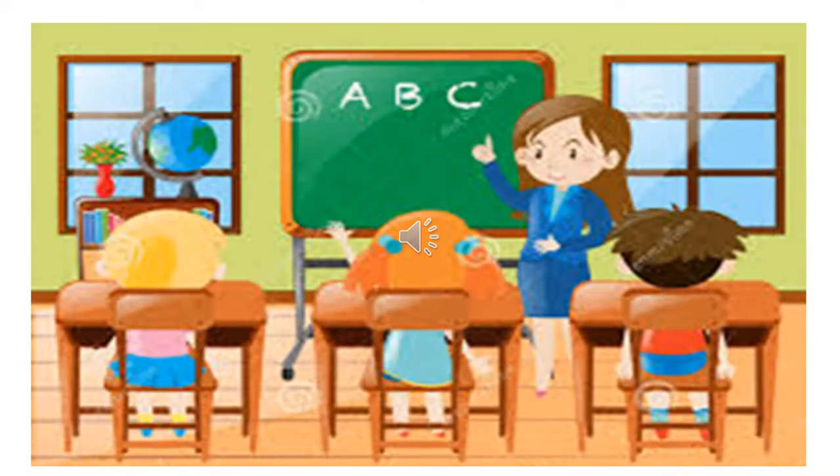So children, this is a classroom. Classroom is a big room. It has a blackboard where the teacher can write ABCD for you to learn. There are benches and chairs for the children to sit. In this picture, you can also see a cupboard with books kept in the class.